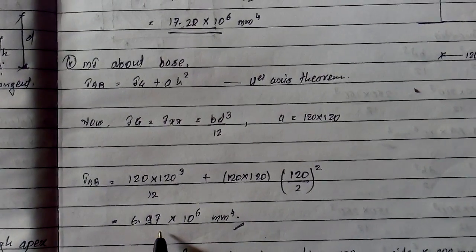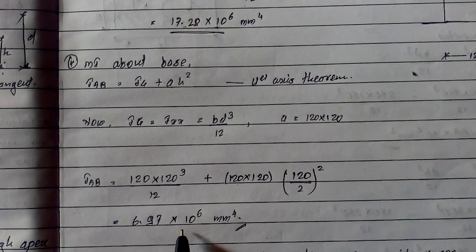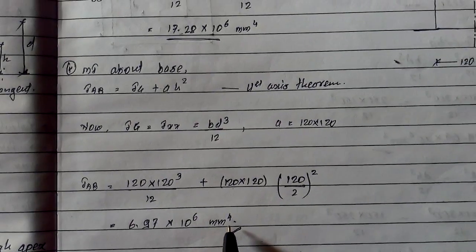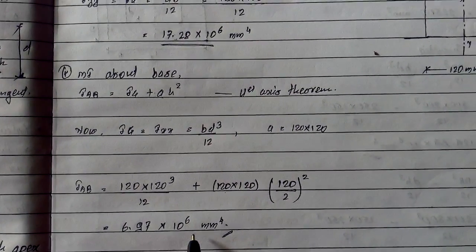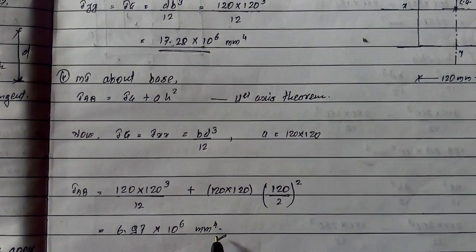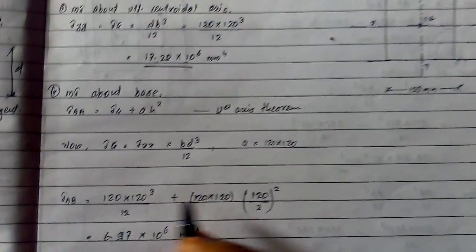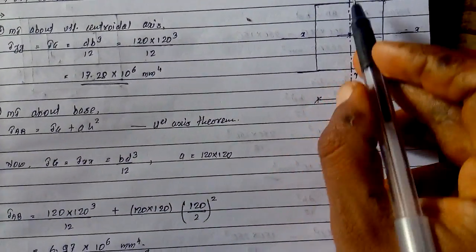After calculating, the answer we get is 6.97 × 10⁶ mm⁴. This is moment of inertia about base.